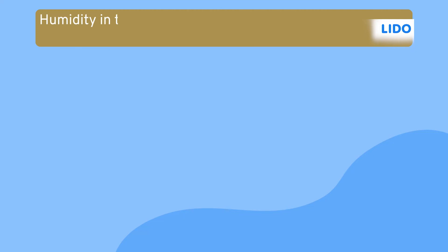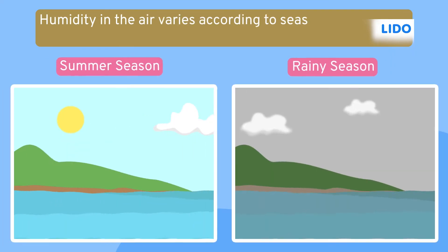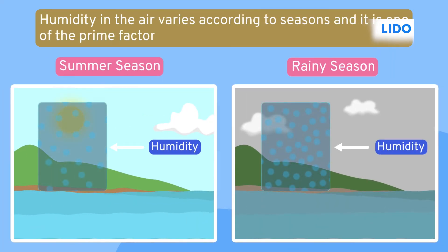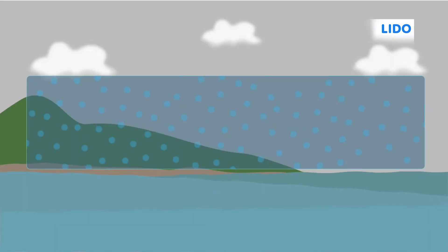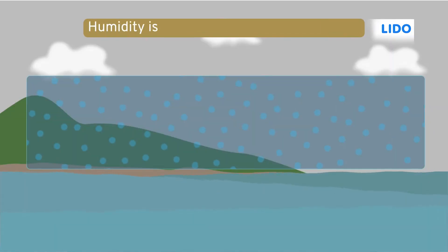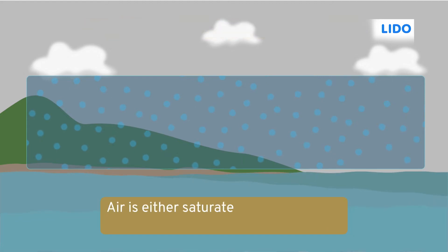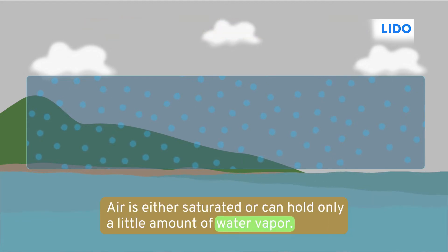Well, humidity in the air varies according to the seasons and it's one of the prime factors that affects the rate of evaporation. We know that humidity is the amount of water vapor present in the air and is high during rainy season. But air can hold only a definite amount of water vapor at any given time. Therefore, when the humidity is already high in the rainy season, the air is either saturated or can hold only a little amount of water vapor. This slows down the rate of evaporation and in such cases we don't sweat.